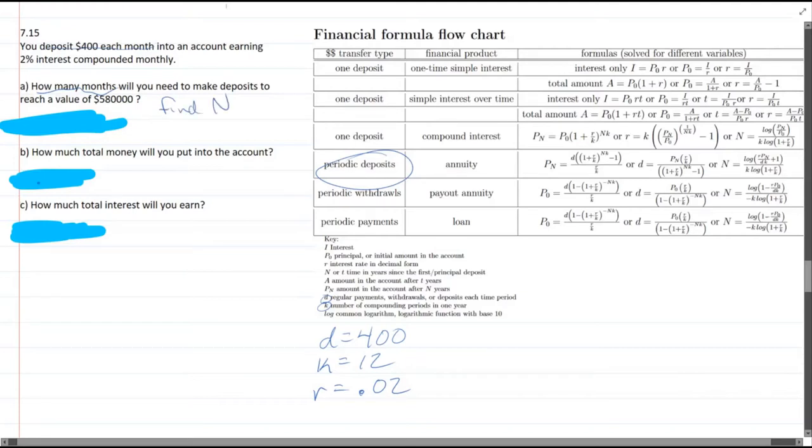So we want to find n, which is the time in years. What we really want to do is find the years, and then the answer is going to be 12 times n. The number of months is 12 times the number of years.